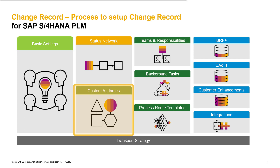You also need to think about the classification. Do you want to have classification available for the change record? If yes, which kind of classifications are necessary? Is it necessary to assign one or multiple classifications to a specific change record type from the initial status?